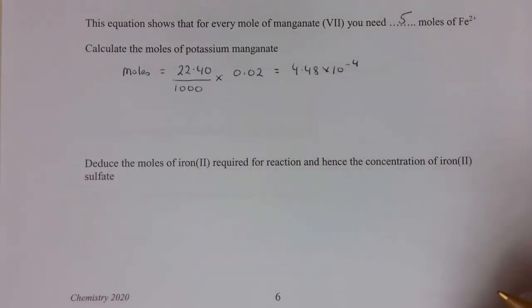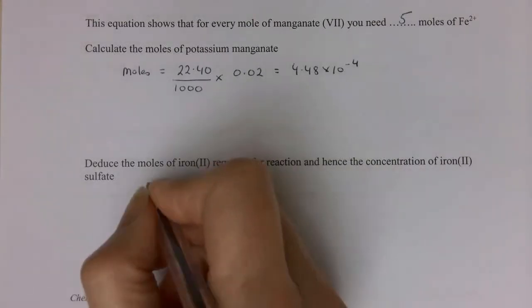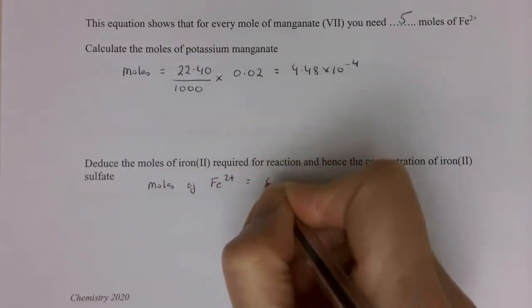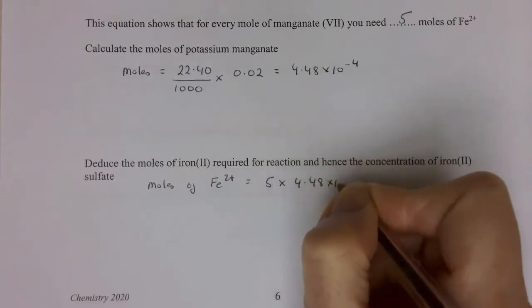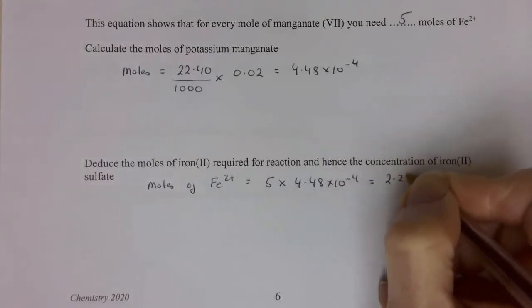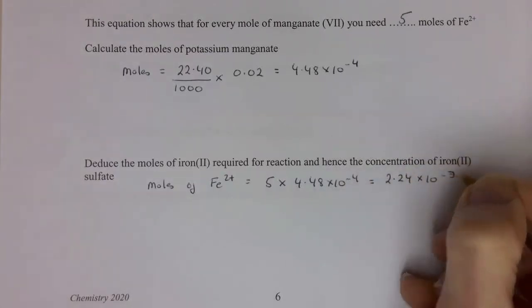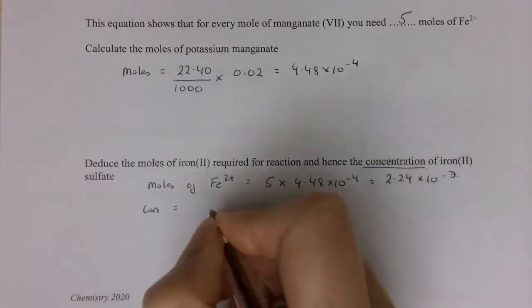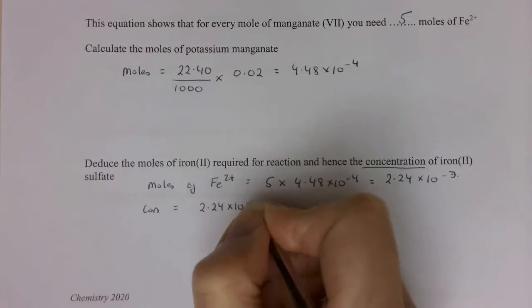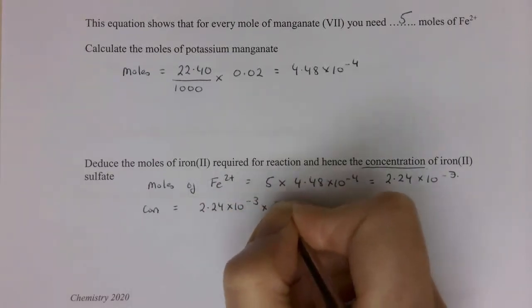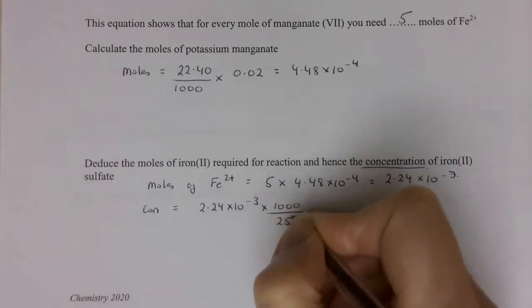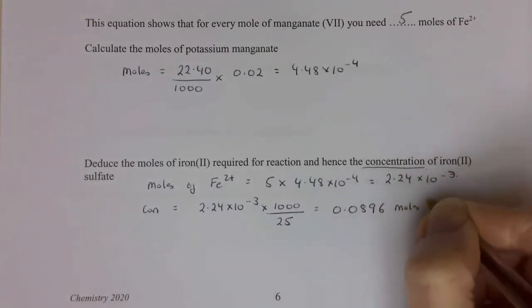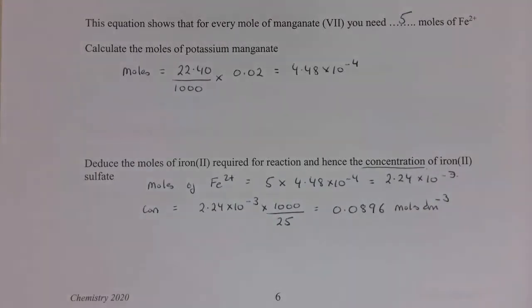We can use this to work out the number of moles of iron, because we know it's 5 times this value, so moles of Fe2+ is 5 times my 4.48 times 10 to the minus 4. So that is 2.24 times 10 to the minus 3. We're asked to work out the concentration. So the concentration is going to be my moles, 2.24 times 10 to the minus 3, times by 1,000, divided by my volume, which in this case was 25. So I get 0.0896 moles dm to the minus 3. And that's my concentration.